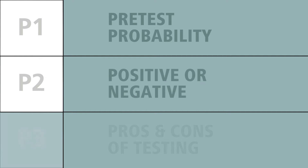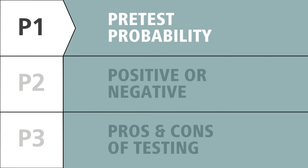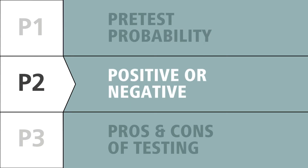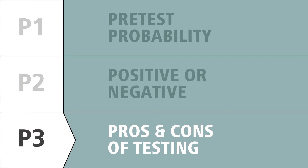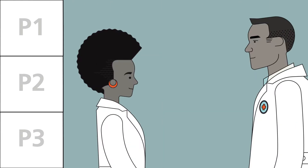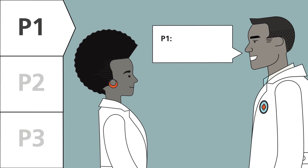When doctors are considering ordering a test, it is helpful to follow the three P's framework. P1: determine the pretest probability of disease. P2: understand how that probability could change with a positive or negative test result. P3: weigh the pros and cons of testing. Let's take a closer look at each P, starting with P1, pretest probability.